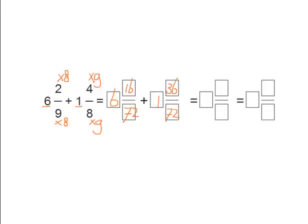Now we add. The 72 stays the same. 6 plus 1 is 7, and 16 plus 36 equals 52.